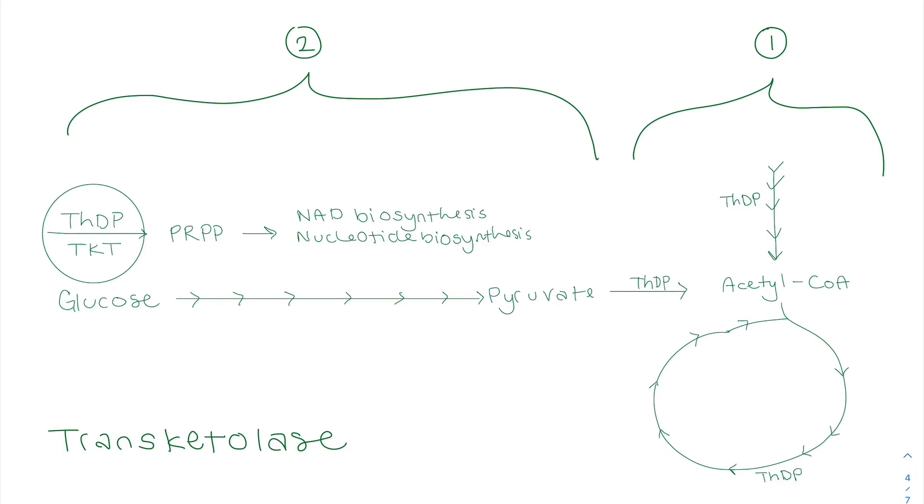We also see maple syrup urine disease, megaloblastic anemia, Wilson's disease. This can all be treated with high doses of thiamin or vitamin B1.